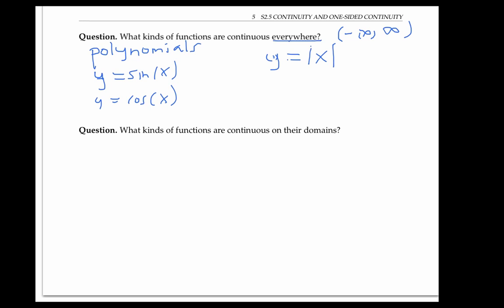Now, if we ask the second question, what kinds of functions are continuous on their domains, we get a lot more answers. Not only polynomials, but also all rational functions, things like f of x equals 5x minus 2 over x minus 3 squared times x plus 4 is a good example of a rational function.